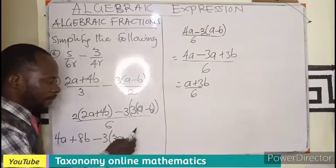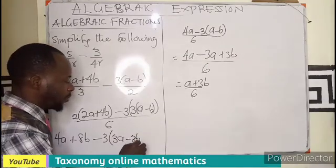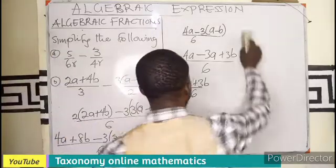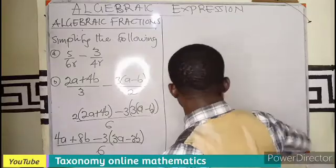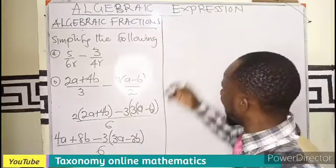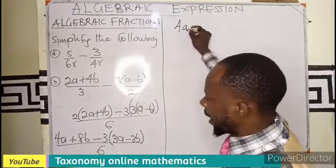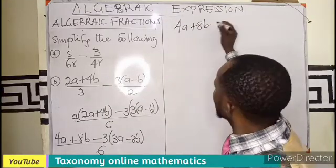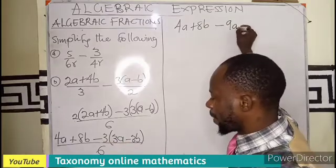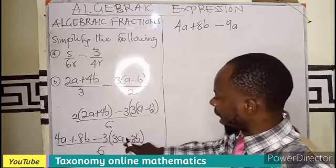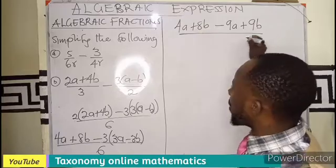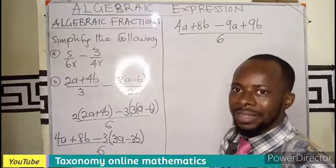Then all over our denominator 6. So what do we do? We still have a bracket to expand. So we maintain our 4a, 8b minus 3 times a, this gives us 9a. Negative in front, so this side becomes plus 9b all over 6.